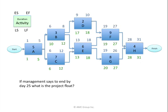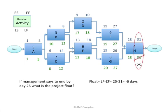The last question: if management says to end the project by day 25, what is the project float? Management is saying activity H needs to end by day 25. To calculate float: late finish minus early finish — 25 minus 31 equals negative 6 days. The answer is negative because the plan shows the project finishing in 31 days, while management says to finish no later than 25 days. Therefore, if we stay on the current plan, we will be 6 days late. I hope this example helped as you're preparing for the PMP or CAPM exam. Check back later for more examples.